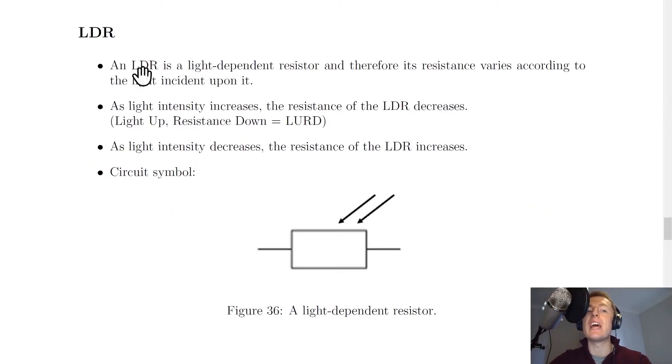Next we have the LDR and an LDR stands for a light dependent resistor. So this is a resistor whose resistance varies according to the light incident upon it. So we also have a rule for LDRs just like we did for thermistors. And this says that as light intensity increases, the resistance of the LDR decreases.